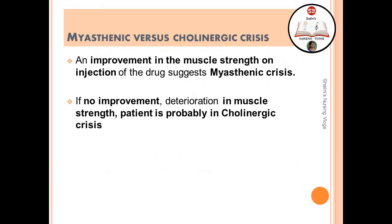Myasthenic crisis occurs when individuals have too little acetylcholine, while cholinergic crisis is the opposite — too much acetylcholine. The distinction: if muscle strength improves on injection of edrophonium, it suggests myasthenic crisis. If there is no improvement or deterioration in muscle strength, the patient is likely in cholinergic crisis.